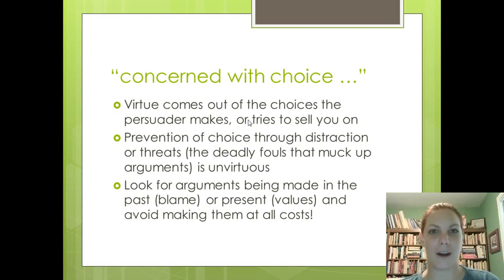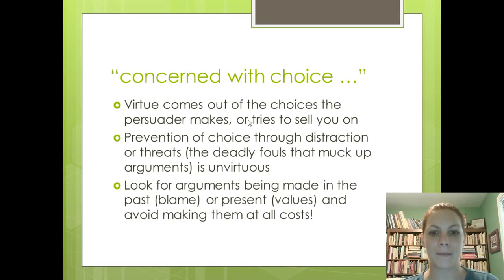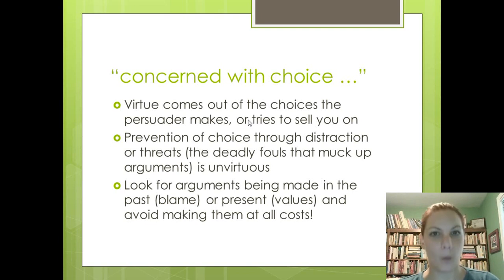The second part of Aristotle's definition says that we should be concerned with choice if we are virtuous. Virtue comes out of the choices that the persuader makes or tries to sell you on. Prevention of choice through distraction or threats — many of those rhetorical fouls that we discussed last week — is considered unvirtuous. You want to look for whether arguments are being told in the past, which has to do with blame, or the present, which has to do with values or right and wrong. You want to avoid those and stay in the future — that is, of course, the heart of deliberative argument.